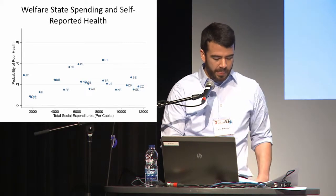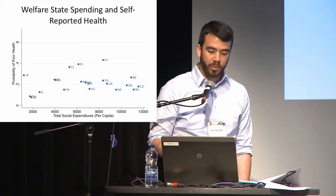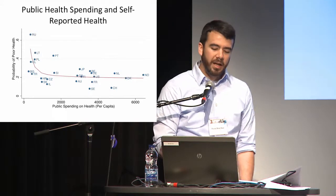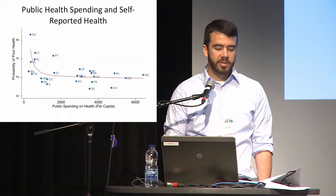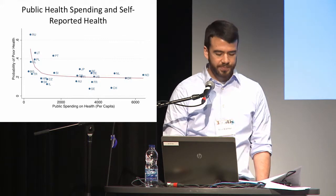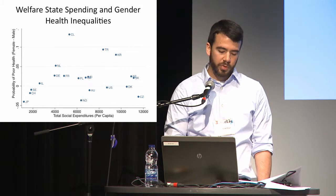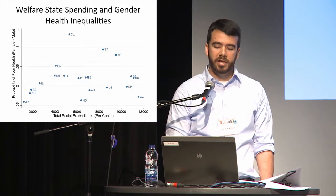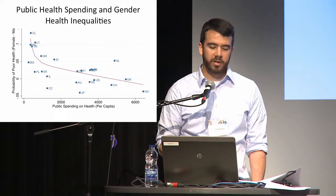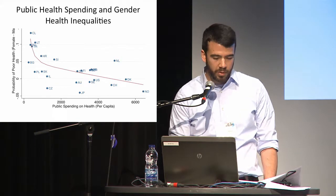Looking graphically at total social expenditures and overall probability of poor self-rated health, we don't really see an association. But when we look at public spending on health, we see a kind of non-linear relationship where there seem to be some initial improvements at lower levels of public health spending that taper off at higher levels. Looking at the gradient in terms of gender and total social expenditures, there's no strong association in any direction. But looking at public health spending, there's a non-linear association where countries at lower levels of public health spending tend to have women more likely to report poor health than men.